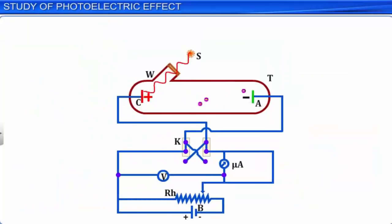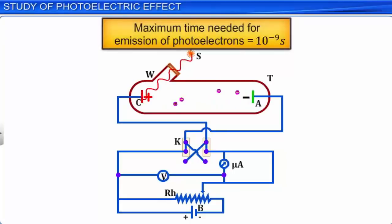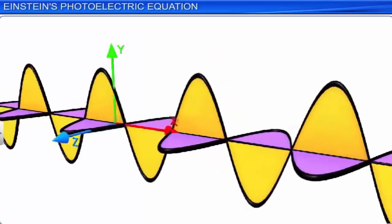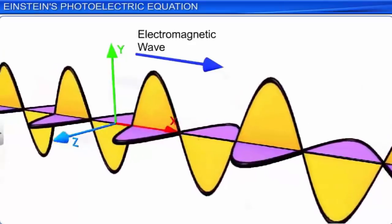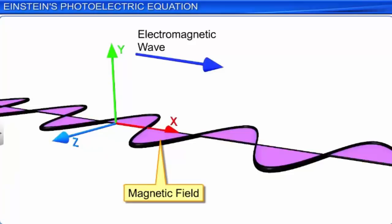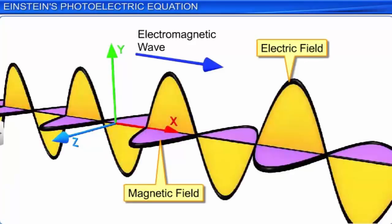Another fact regarding the photoelectric effect is that the maximum time needed for the photosensitive plate C to emit electrons is 10⁻⁹ seconds or even less. Light is an electromagnetic wave, consisting of electric and magnetic fields, with the continuous distribution of energy over the region of space through which it propagates.